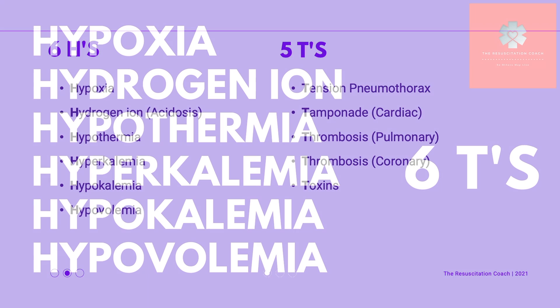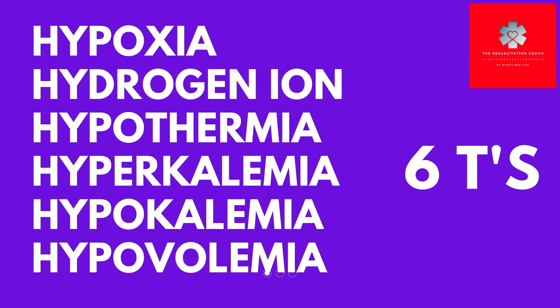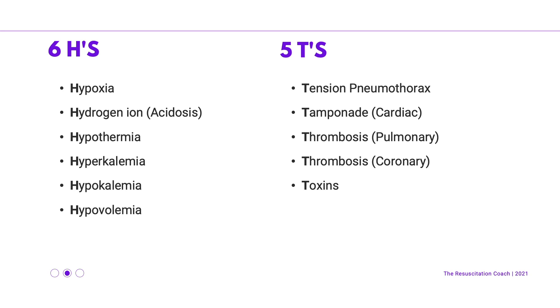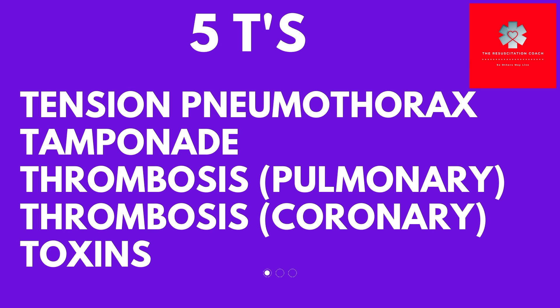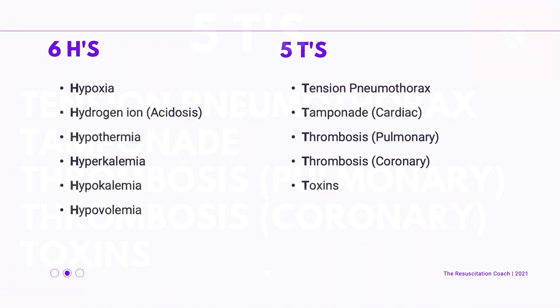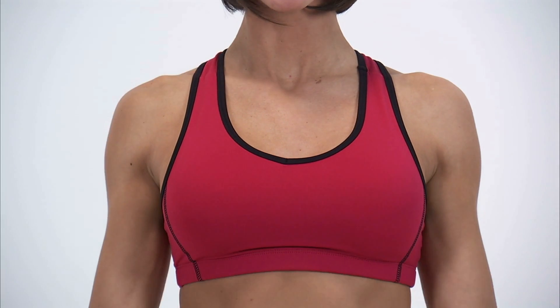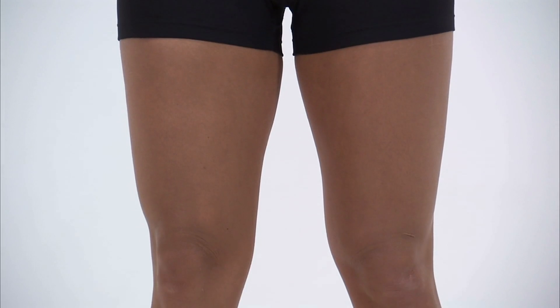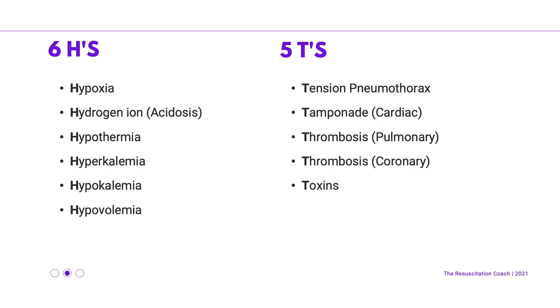Always think: Hypoxia, Hydrogen ion (acidosis), Hypothermia, Hyperkalemia, Hypovolemia — those are your H's. Your T's include: Tension pneumothorax, Tamponade (cardiac), Thrombosis (pulmonary), Thrombosis (coronary), and Toxins. Personally, I always follow a head-to-toe approach when looking at my H's and T's to make it easier to remember.